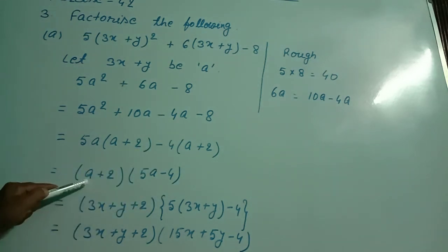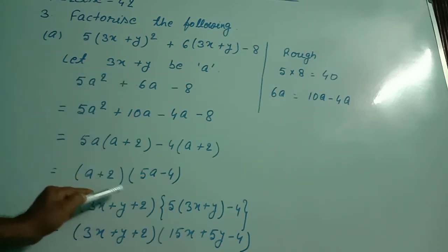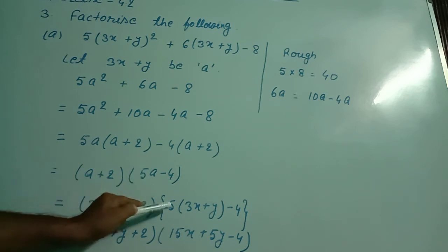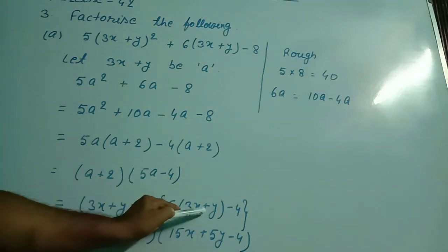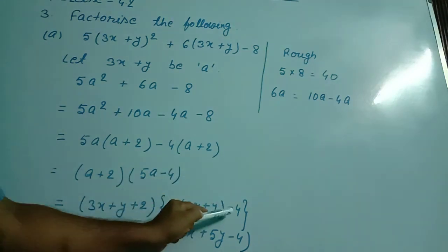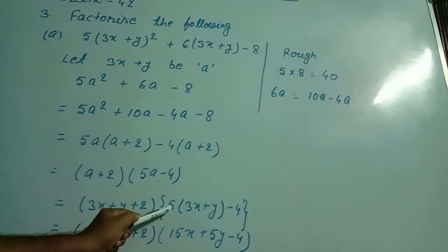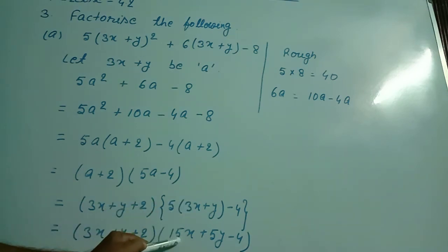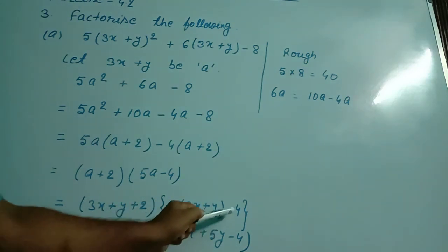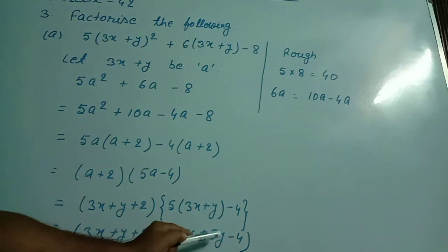In this step I wrote the value of a, which is 3x + y. So (3x + y + 2) is written as it is. For (5a - 4), I multiplied: 5 times (3x + y) gives 15x + 5y, minus 4. So the factors of the given expression became (3x + y + 2)(15x + 5y - 4).